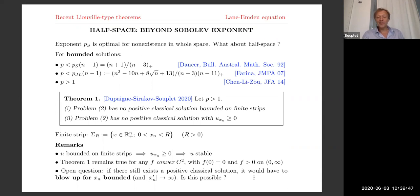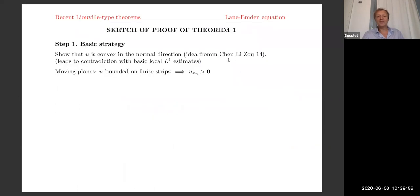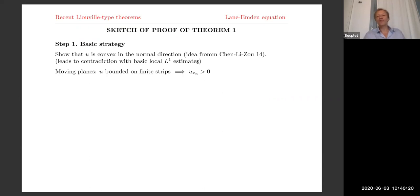Let me give a sketch of the proof of this new theorem. The basic strategy is to use the idea of Chen-Li-Zhao: show that U is convex in the normal direction. If U is convex in the normal direction, it's not difficult to get a contradiction because you have some basic local L¹ estimates which are easy. If the solution is convex, it has to become large everywhere in some sense, and you then contradict some easy L¹ estimates. So the main task is to show convexity of the solution.